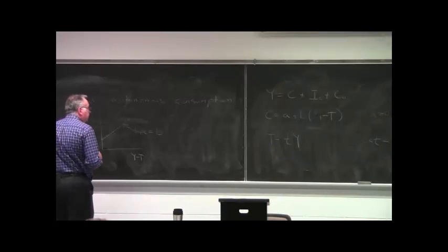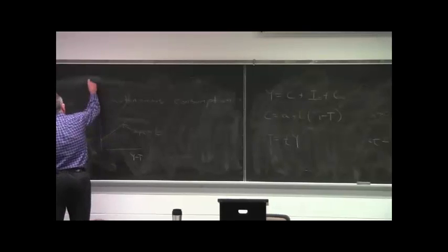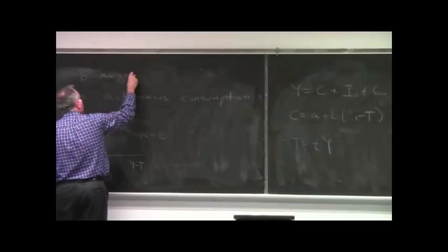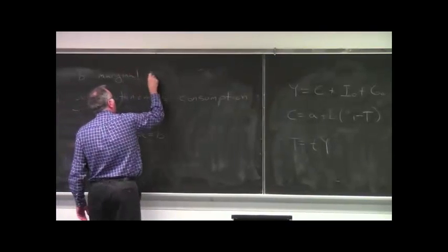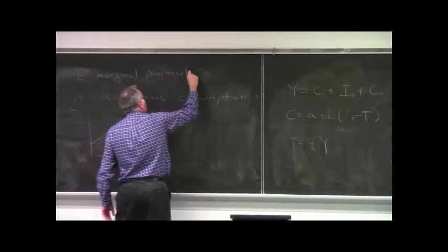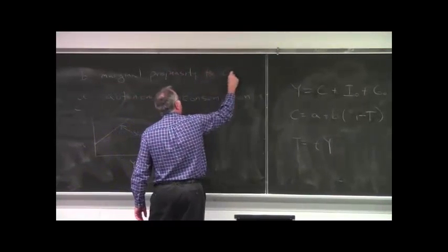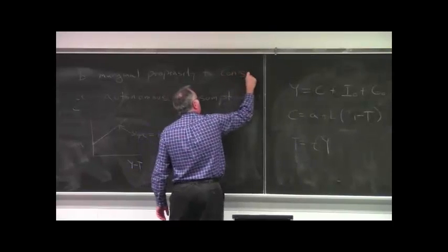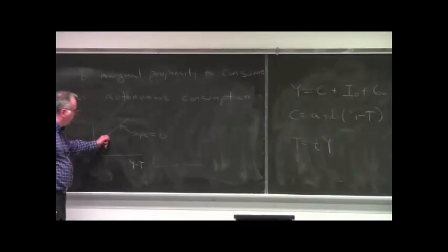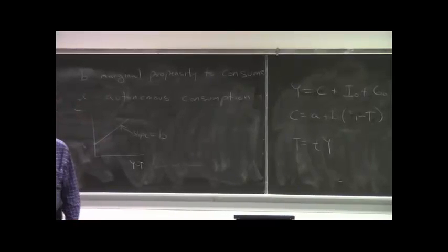B is just the slope. B goes by the name of the marginal propensity to consume.